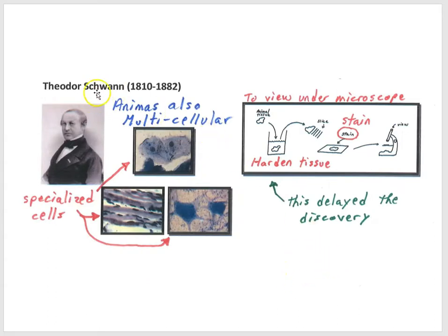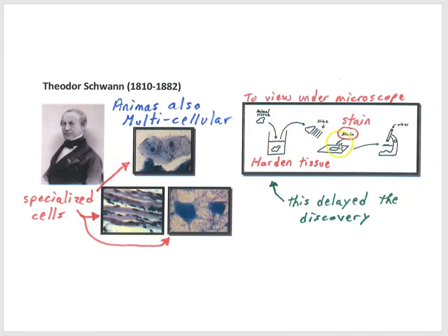Another scientist, Theodore Schwann, was interested in animals. He too helped establish the fact that animals are composed of cells and so are multicellular organisms. It took a little longer for scientists to work out that animals were composed of cells because animal tissue is harder to observe under the microscope — you had to harden the tissue, then slice it, and then stain it. That delayed the discovery for a bit. But Schleiden and Schwann together persuaded the scientific community that animals and plants are multicellular organisms.